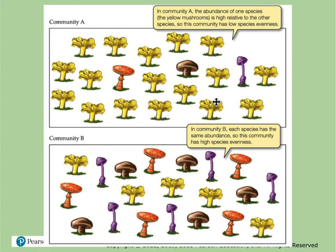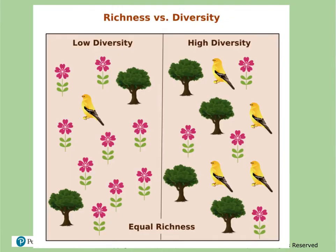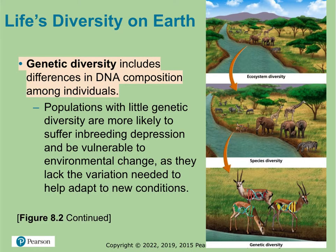Here is a different community picture where you can see that species richness — the number of different types of species — is the same, but abundance is different. You can pause and look at those images if you want.